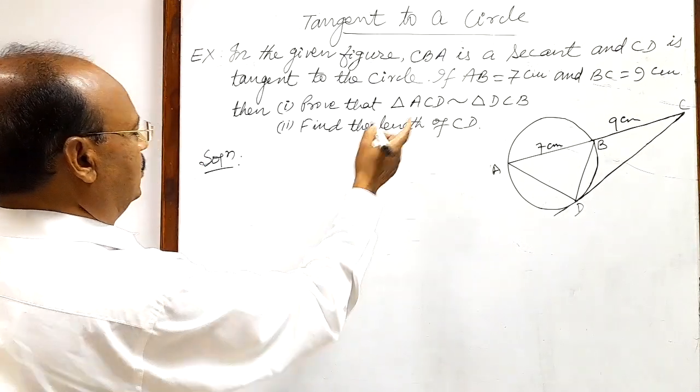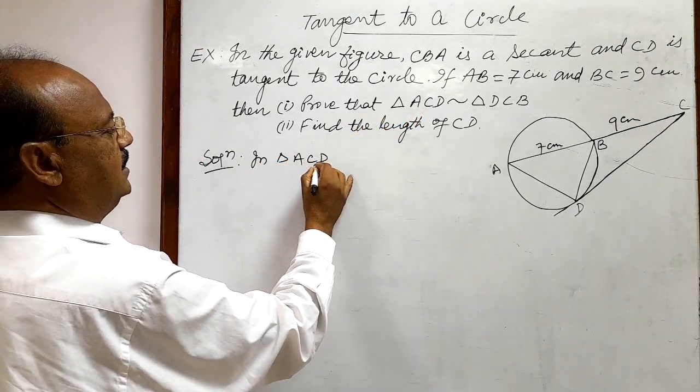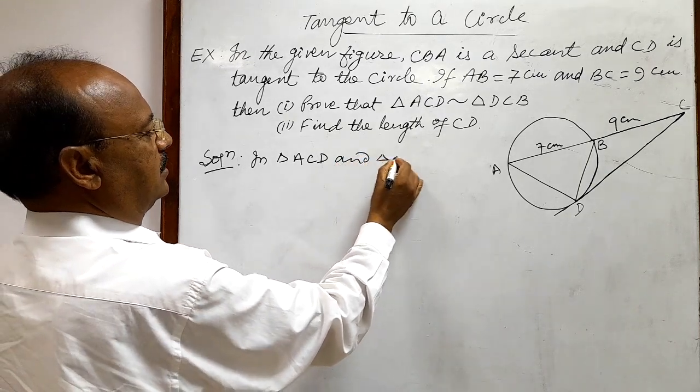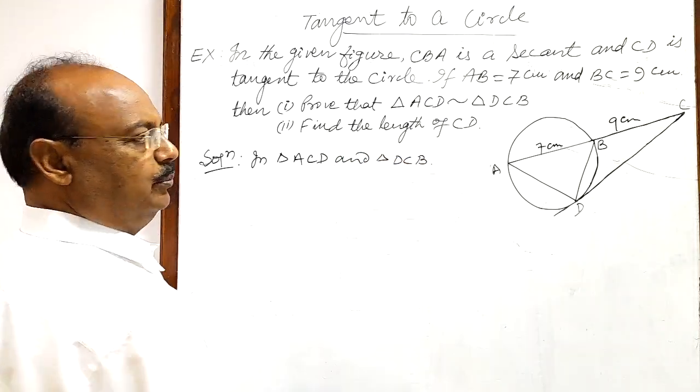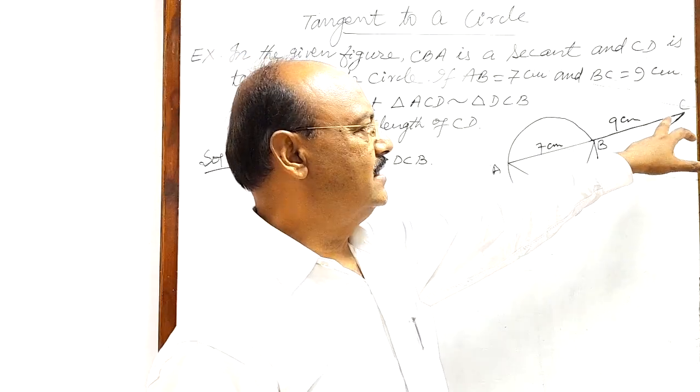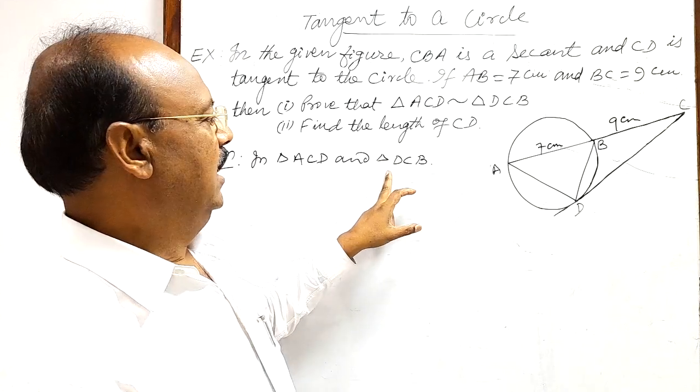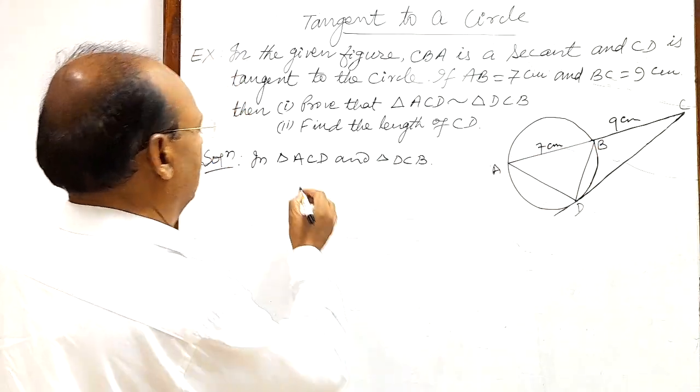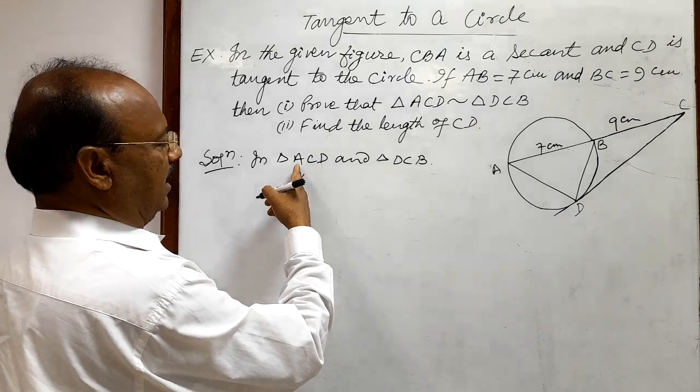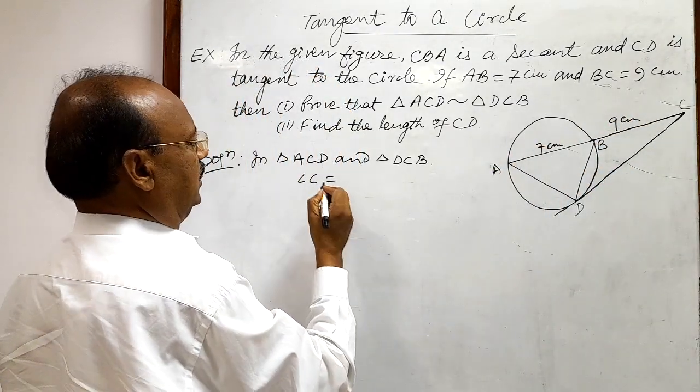First of all, let us take these two triangles: in triangle ACD and triangle DCB. Okay, so first of all, angle C is common in each of these two triangles. Angle C is common. Here in triangle ACD this angle C is common.